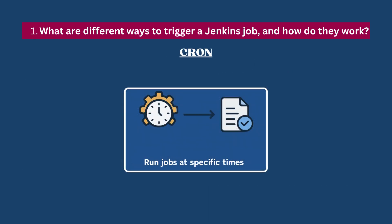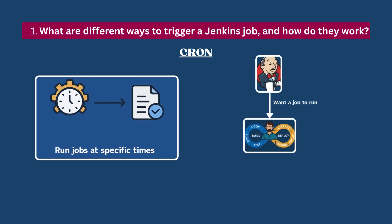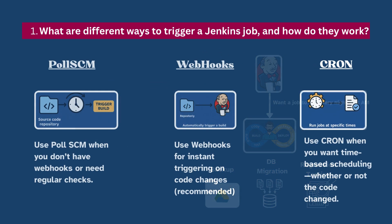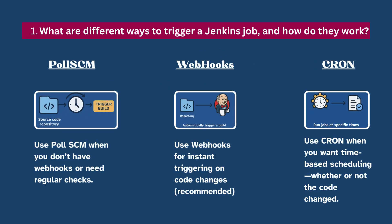Cron lets you schedule jobs based on time, whether or not code has changed. For example, if you want a job to run every night at 2am for a nightly build or cleanup task — this method is ideal for time-based tasks that aren't necessarily tied to code changes. This is mostly used for backups, database migration, or full regression test runs. To summarize: use Poll SCM when you don't have webhooks or need regular checks; use webhooks for instant triggering on code changes — this is the most recommended one; and use Cron when you want time-based scheduling regardless of code changes.